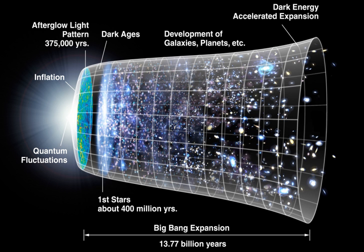But eventually, after numerous billions of years of expansion, the growing abundance of dark energy caused the expansion of the universe to slowly begin to accelerate. Dark energy in its simplest formulation takes the form of the cosmological constant term in Einstein's field equations of general relativity, but its composition and mechanism are unknown. All of this cosmic evolution after the inflationary epoch can be rigorously described and modeled by the λ-CDM model of cosmology, which uses the independent frameworks of quantum mechanics and Einstein's general relativity.